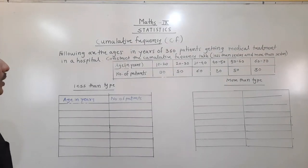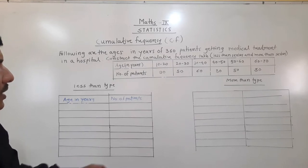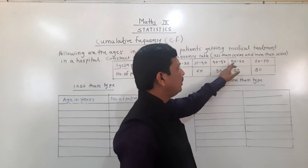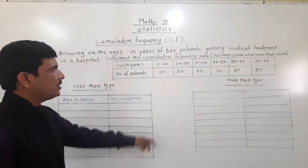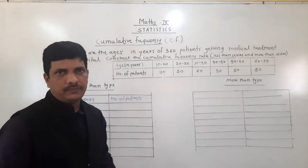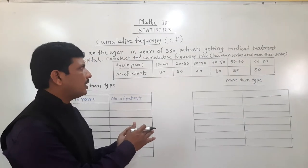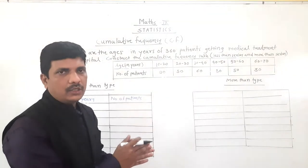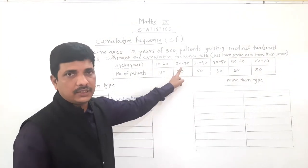For the less than type, if you see the intervals, they are 10 to 20, 20 to 30, 30 to 40, 40 to 50, 50 to 60, and 60 to 70. Readings are going to start from 10 to 20. If 20 is there, it will come in the next interval.